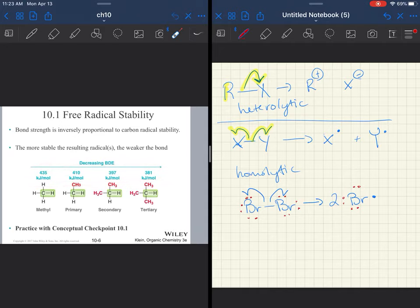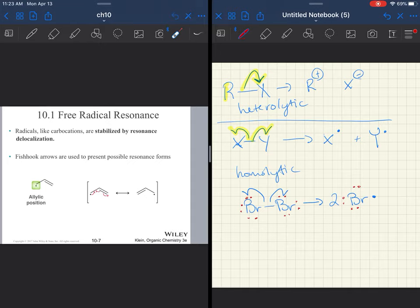A carbanion maintains its tetrahedral electron geometry, and a radical is kind of somewhere in the middle. It's not perfectly flat, but it's not as tetrahedral in geometry as the anion. So it's kind of in the middle.